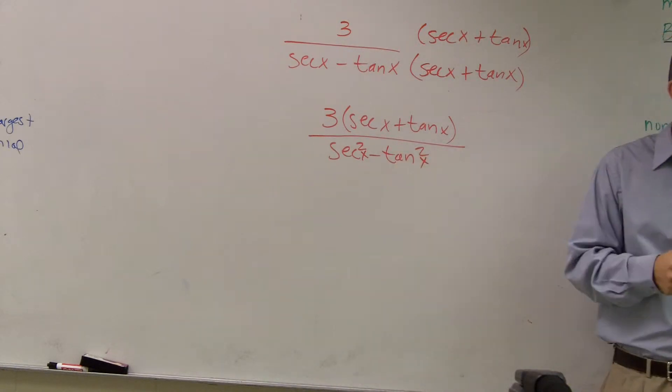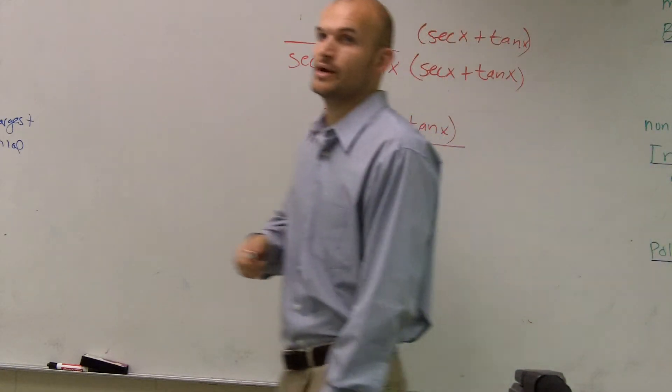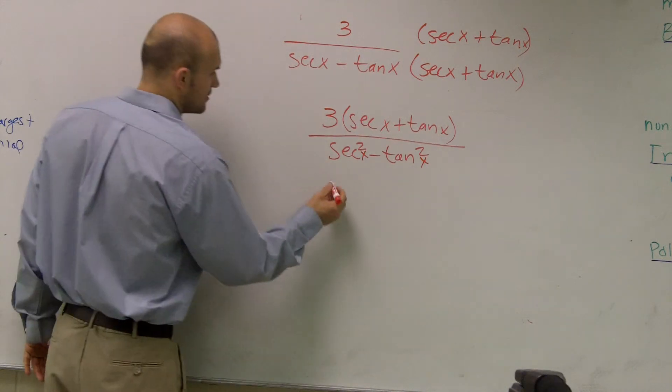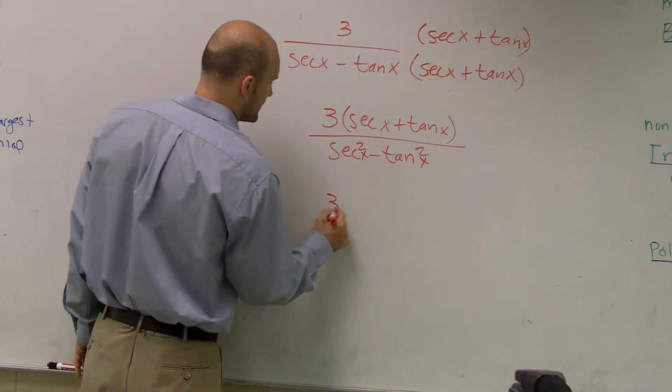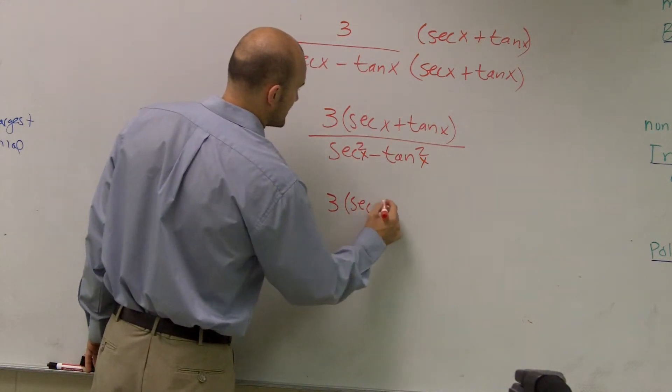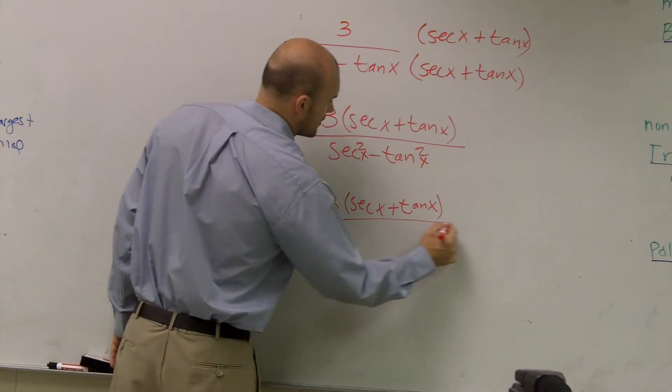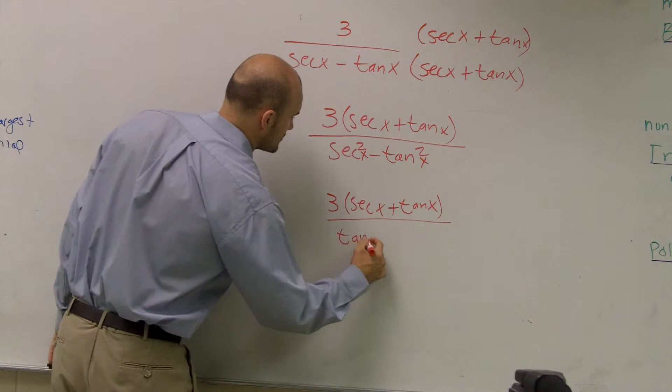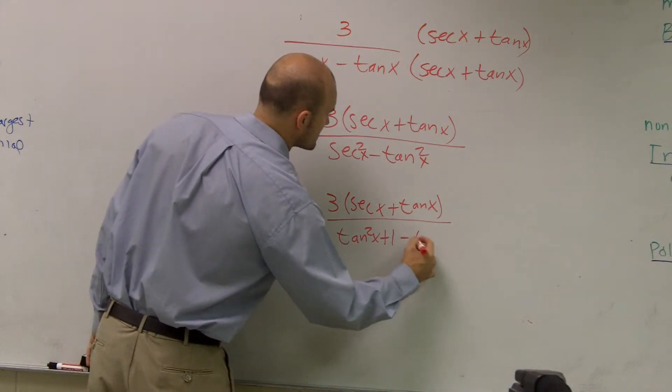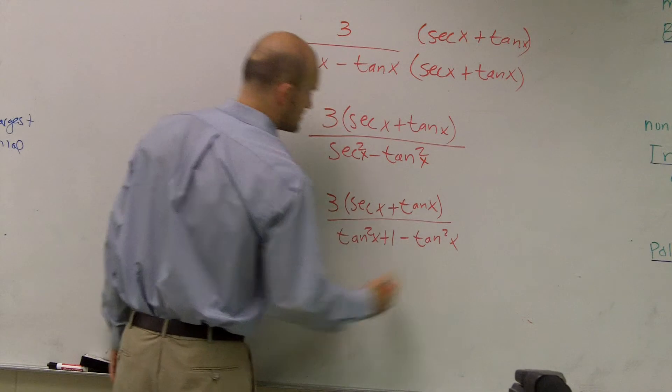So sec²x becomes tan²x plus 1. So now I have 3 times secx plus tanx, all over tan²x plus 1 minus tan²x.